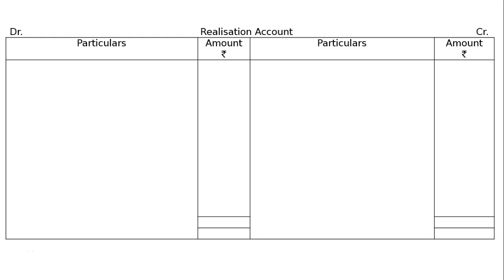A and B are partners in a firm sharing profits and losses in the ratio of 2 is to 1. You are required to close the books of the firm by preparing the realization account, partner's capital account, and bank account.